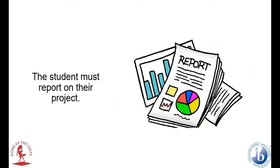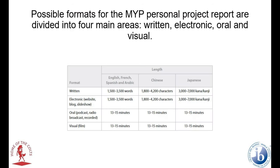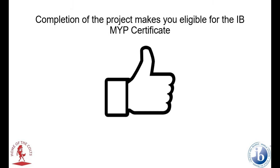A report aims to inform as clearly and succinctly as possible. The MYP Personal Project report demonstrates a student's engagement with his or her personal project by summarizing the experiences and skills recorded in the process journal. Possible formats for the MYP Project are divided into four main areas: written, electronic, oral, and visual. Students who successfully complete the personal project are eligible for the MYP course results.